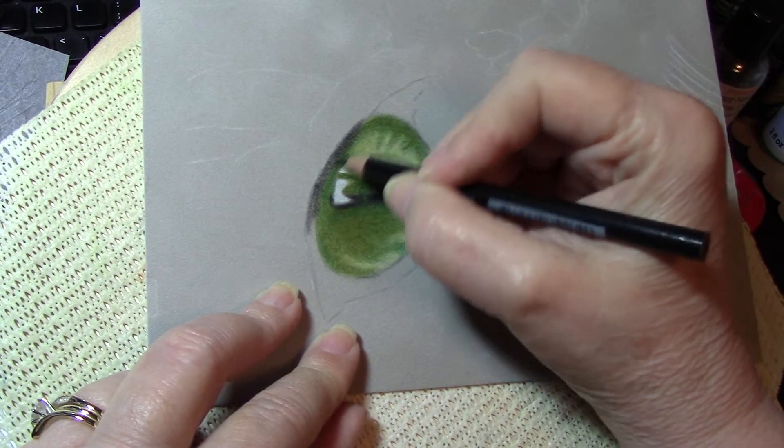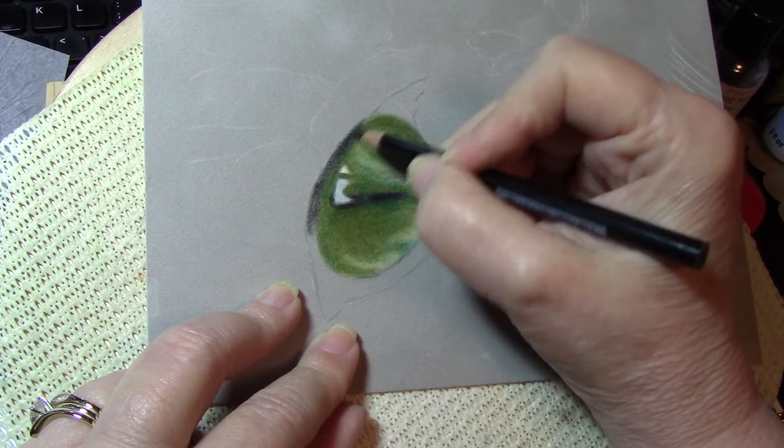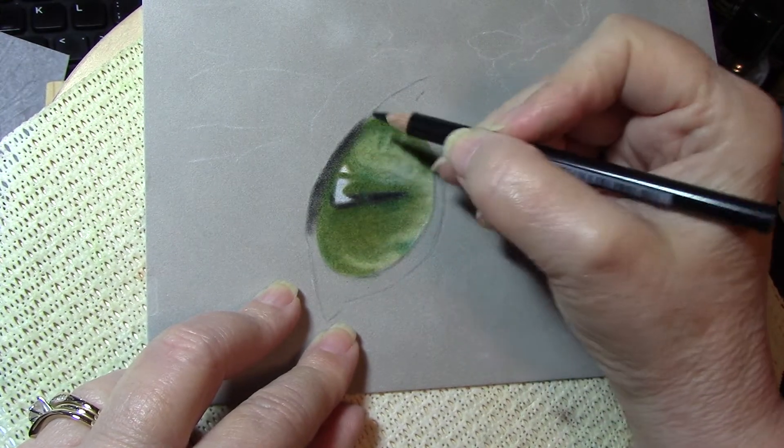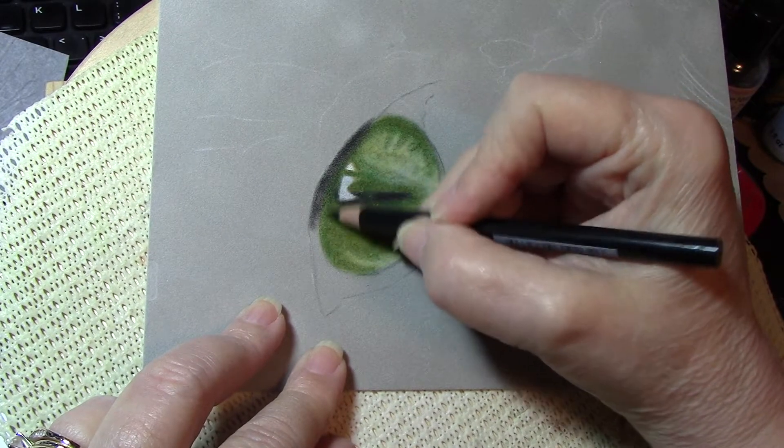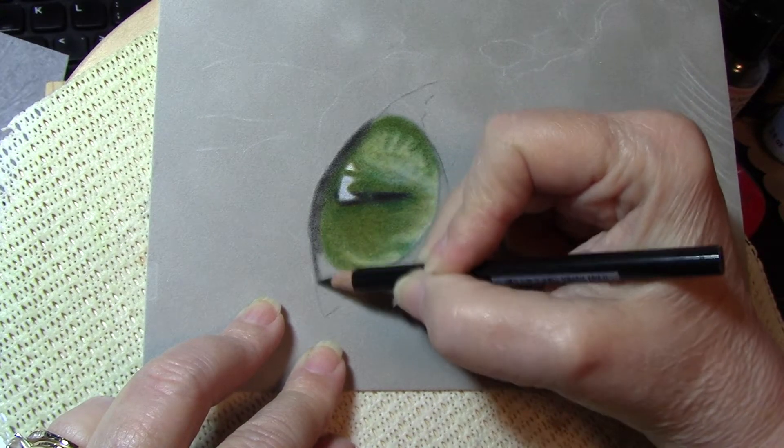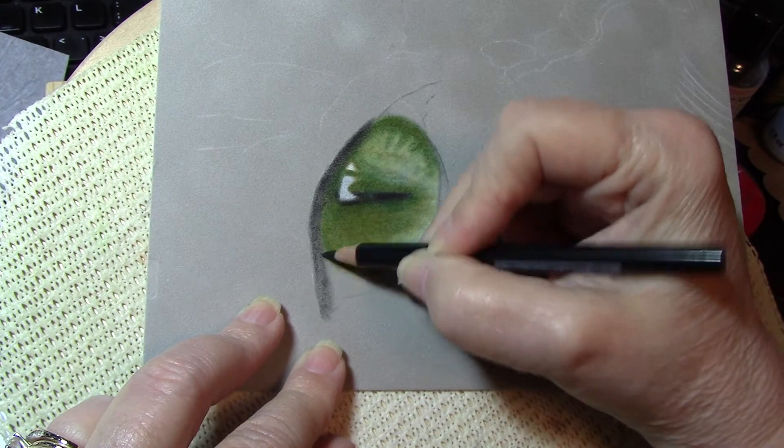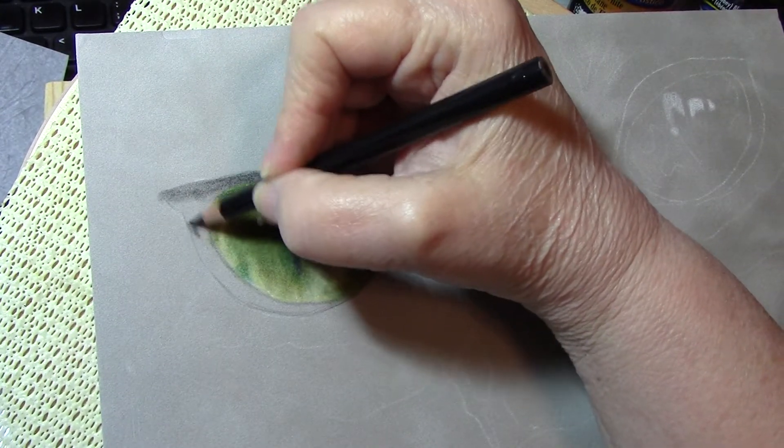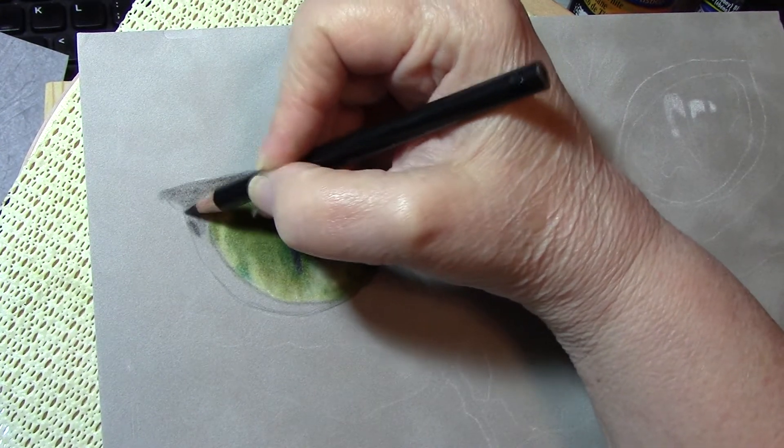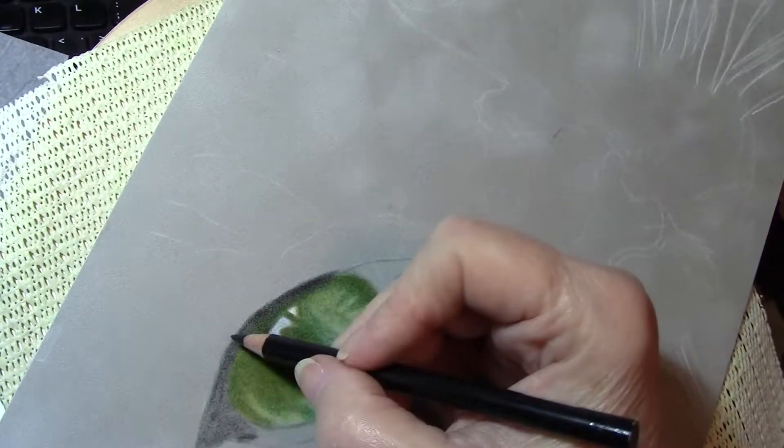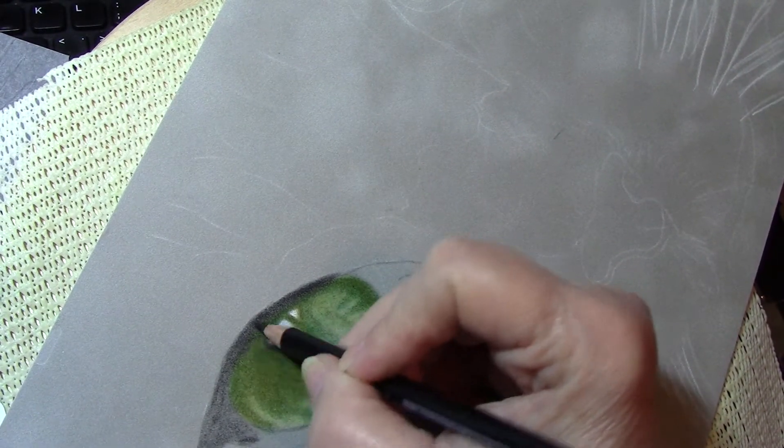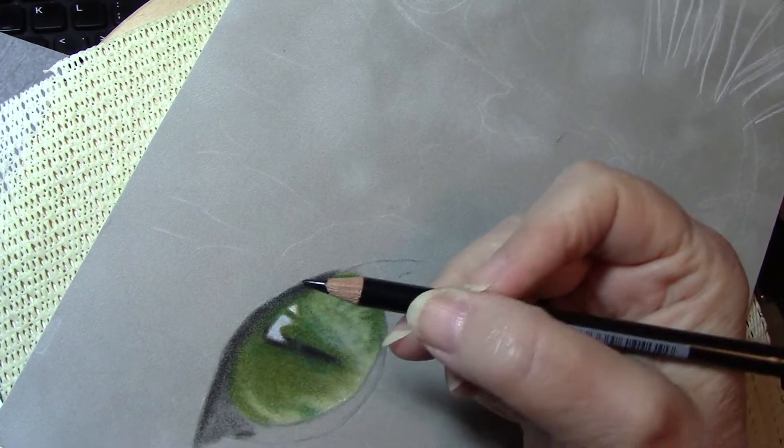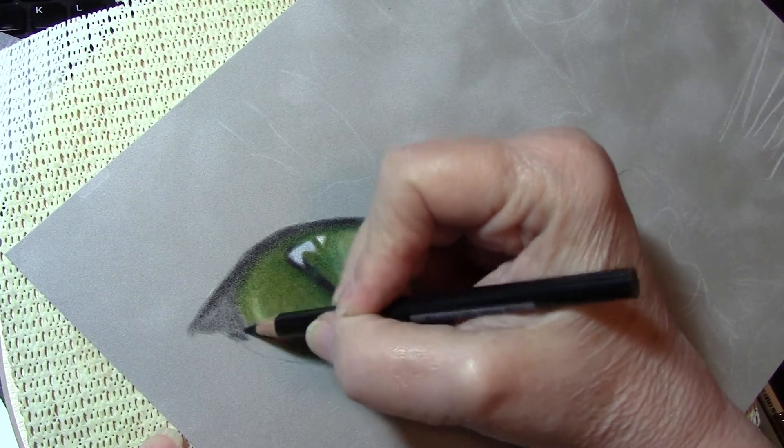I'm using light to medium pressure, bringing the black down just a little bit into the green to blend it together, to make it darker up here.